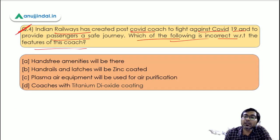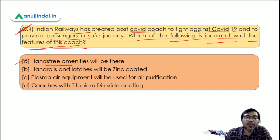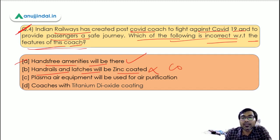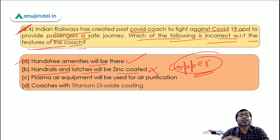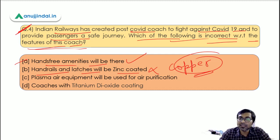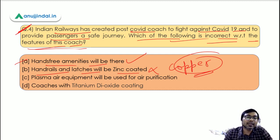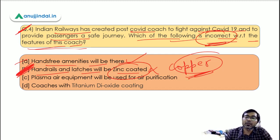The question asks which of the following is incorrect with respect to the features of the post-COVID coach. Option A states hands-free amenities will be there - yes, that is correct. Option B states handrails and latches will be zinc coated - no, that is incorrect. They will not be zinc coated; they will be copper coated, because the virus cannot survive long on copper. Therefore the correct answer is Option B, as the question asked for the incorrect feature.